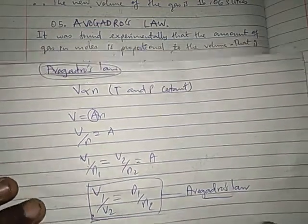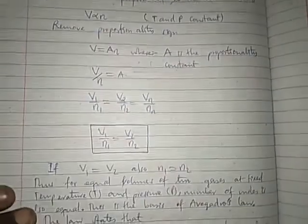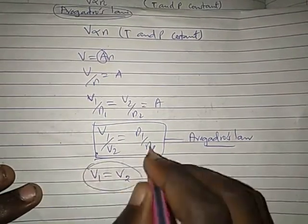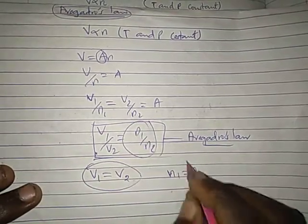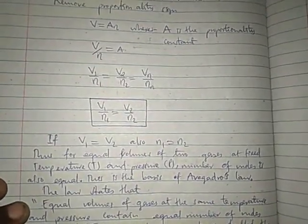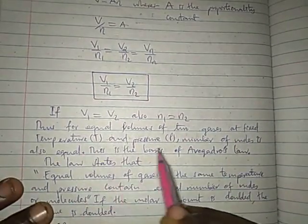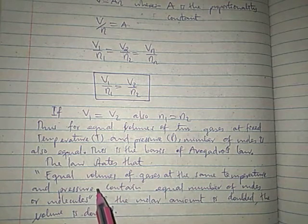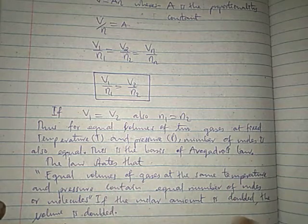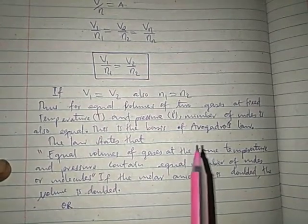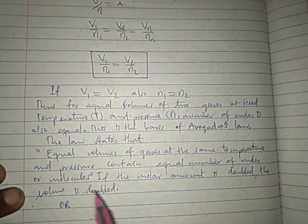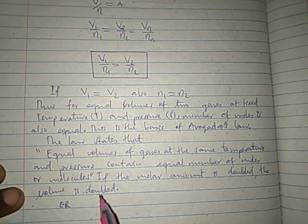This is the expression of Avogadro's Law. The Avogadro's Law remains the same, and we are saying that from Avogadro's Law, if V1 is equal to V2, then the same relation would hold on the right-hand side: n1 would be equal to n2. According to Avogadro's Law, for equal volumes of two gases at fixed temperature and pressure, the number of moles is also equal. Equal volumes of gases at the same temperature and pressure contain equal numbers of moles or molecules. If the molar amount is doubled, the volume is doubled.